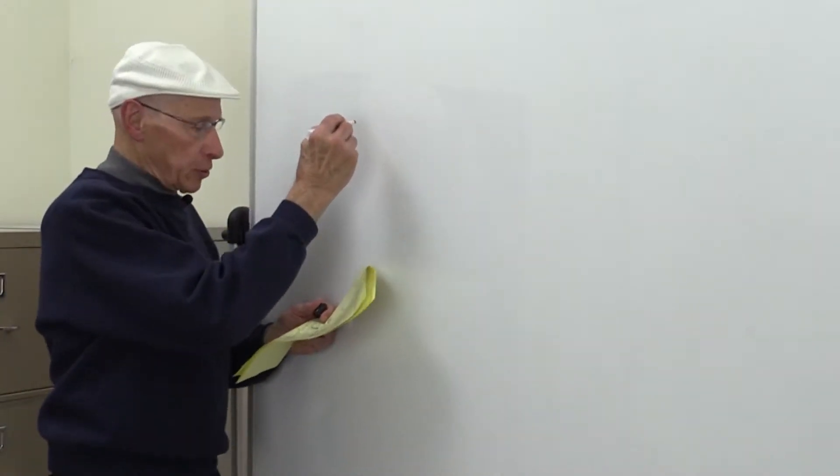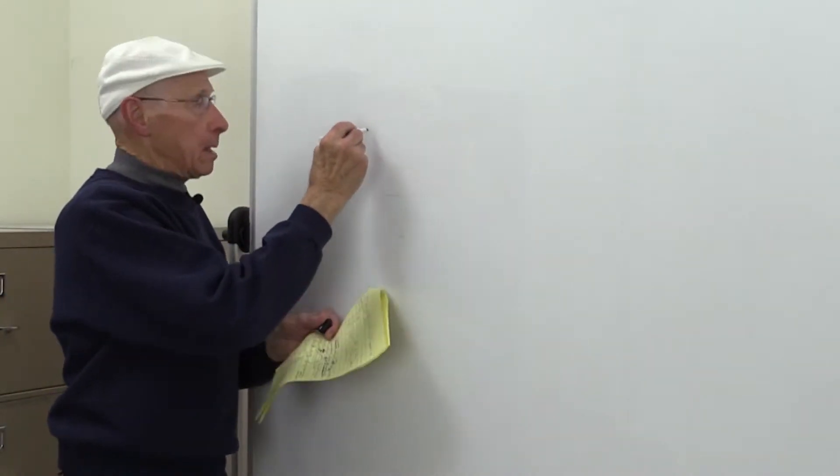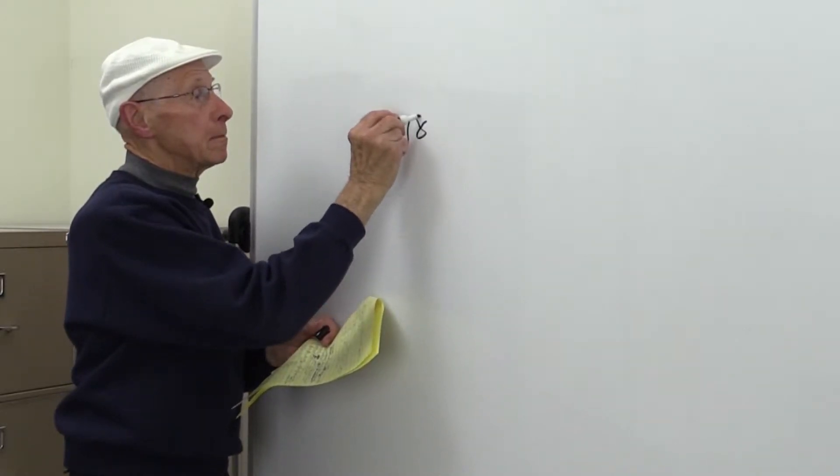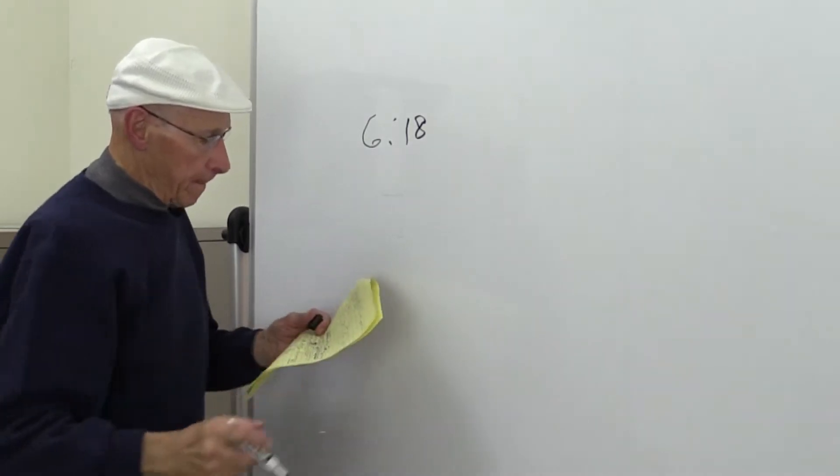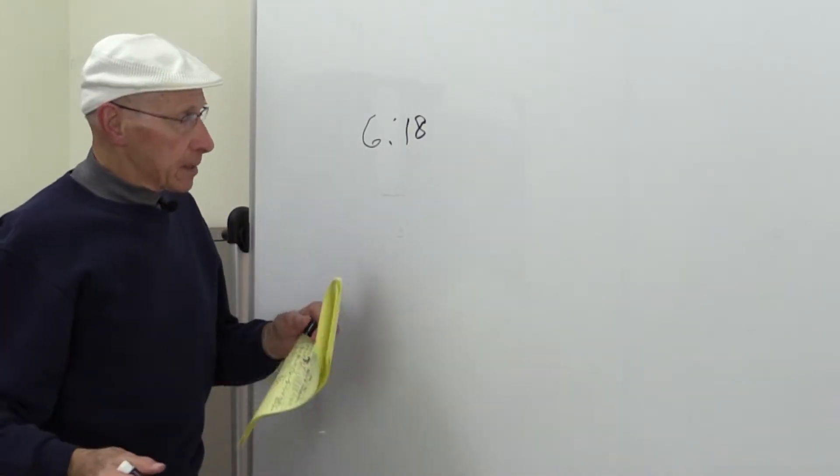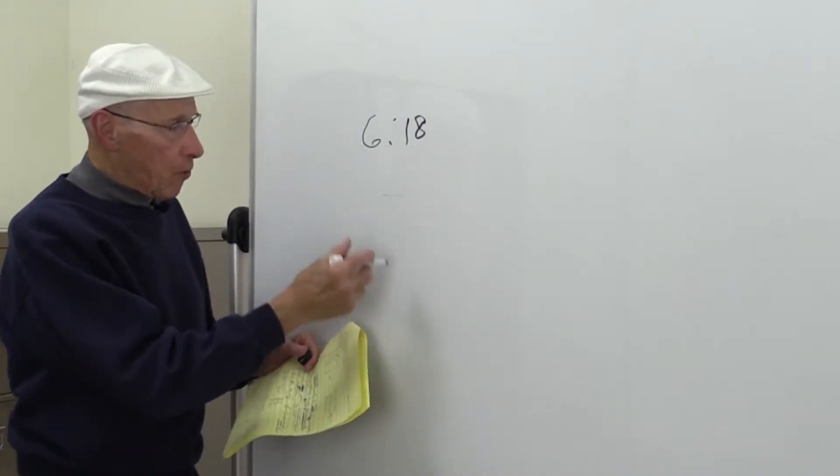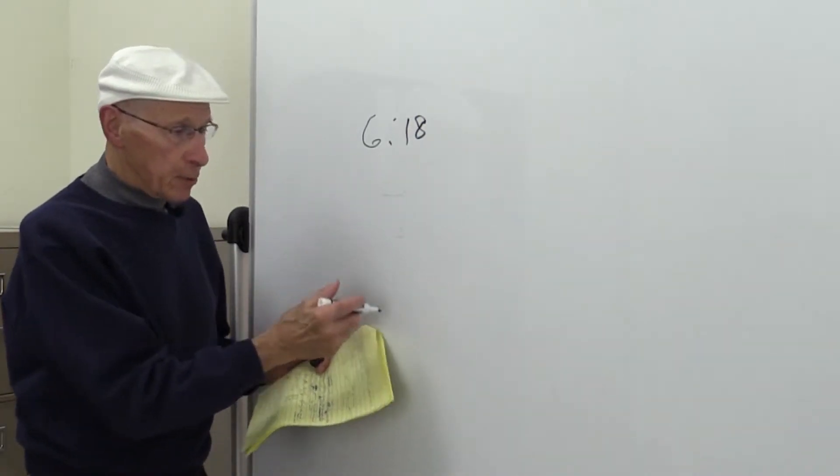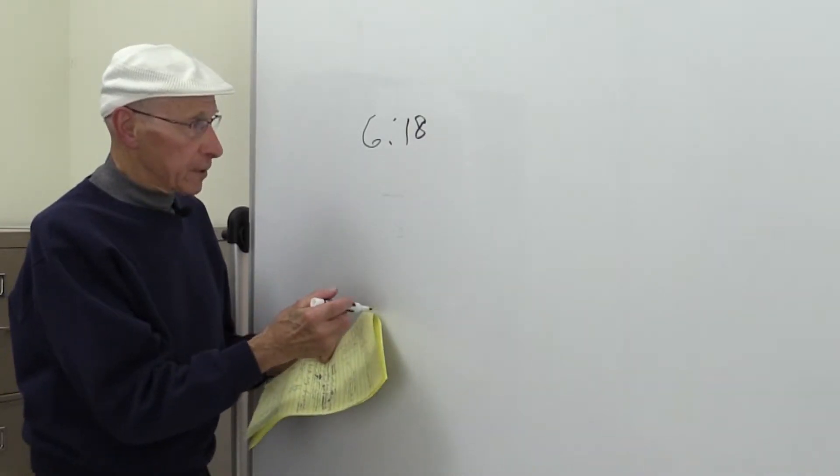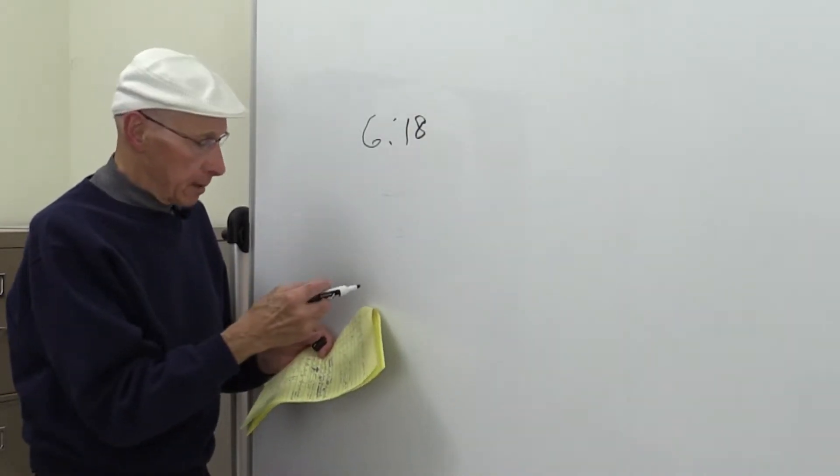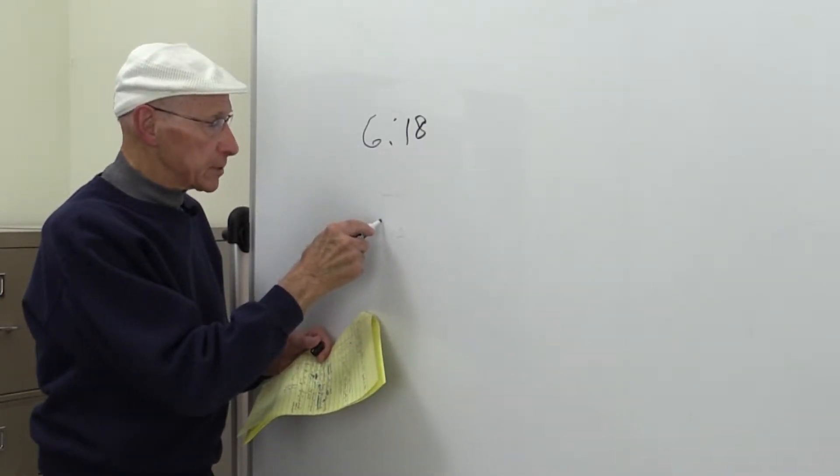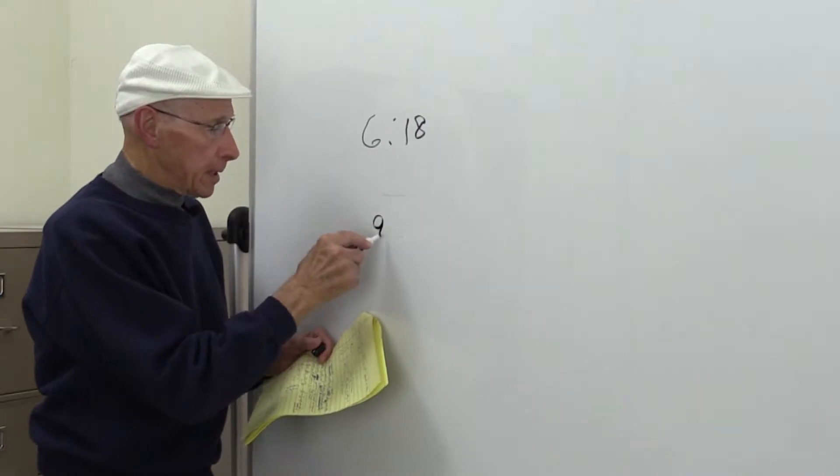So here we have a ratio of 6 to 18. And what they want to find out is I'm going to give you four ratios and you're to tell which ratio does not fit the ratio of 6 to 18. So let me put down these other ratios for you. This is what you have to decide for on the test.